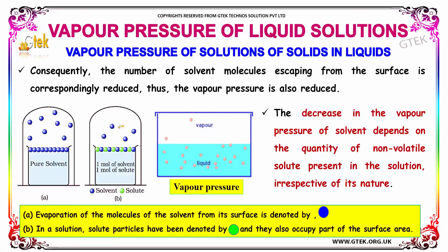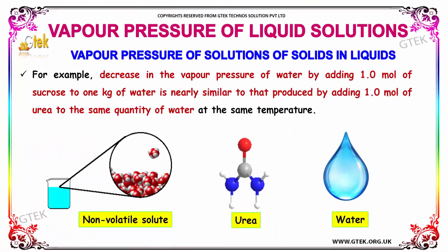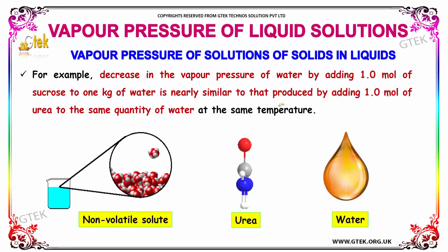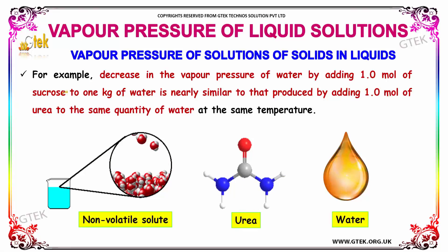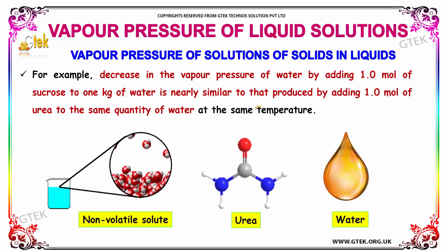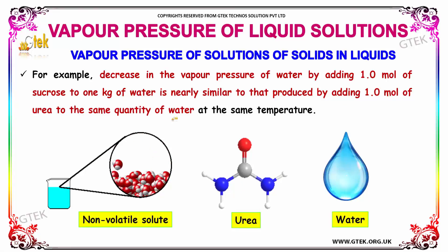The decrease in the vapor pressure of solvent depends on the quantity of non-volatile solute present in the solution, irrespective of its nature. For example, the decrease in the vapor pressure of water by adding 1.0 mol of sucrose to 1 kg of water is nearly similar to that produced by adding 1.0 mol of urea to the same quantity of water at the same temperature.